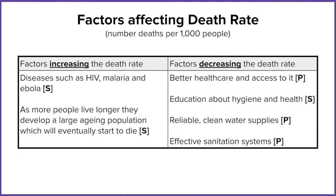On the flip side, we can look at the death rate. LICs have a high birth rate but also a high death rate. This tends to be because of a lack of infrastructure in terms of healthcare and education on how to protect themselves. Things like HIV become a huge issue socially and economically. Malaria and Ebola have also devastated large areas in LIC countries, which increases the death rate.